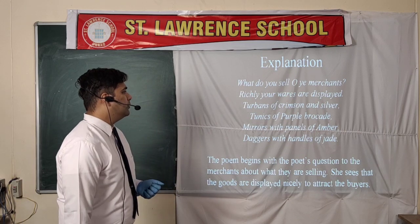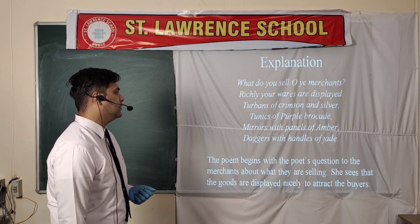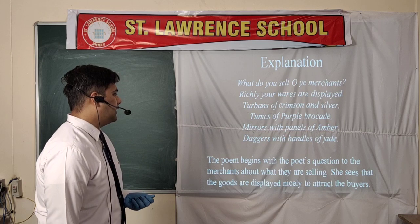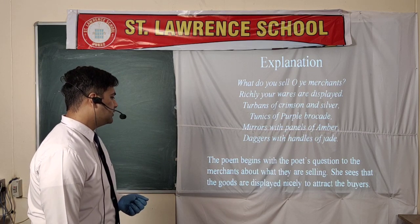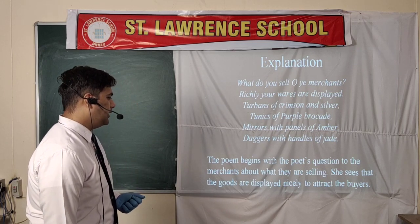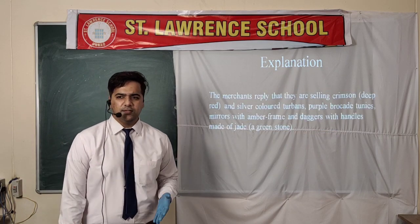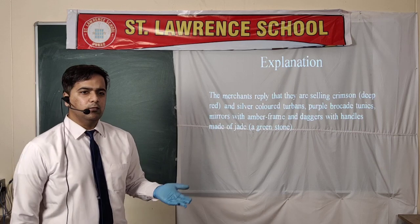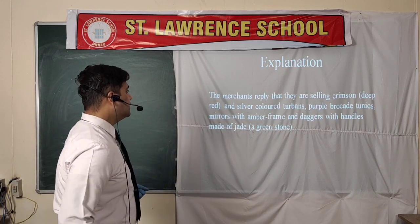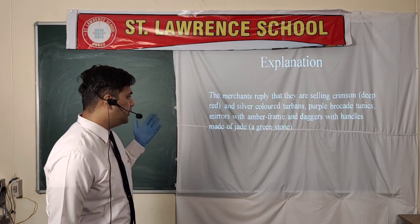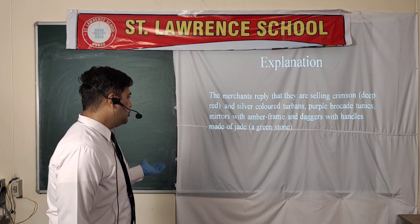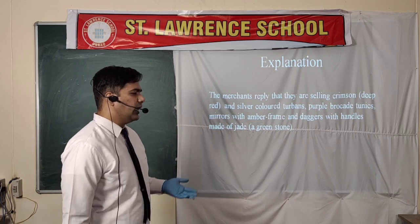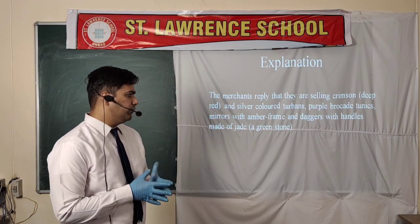The poem begins: 'What do you sell, O ye merchants? Richly your wares are displayed. Turbans of crimson and silver, tunics of purple brocade, mirrors with panels of amber, daggers with handles of jade.' The poet questions the merchants about what they are selling and sees that the goods are displayed nicely to attract buyers. The merchants reply that they are selling crimson and silver colored turbans, purple brocade tunics, mirrors with amber frames, and daggers with handles made of jade — jade-decorated knives.